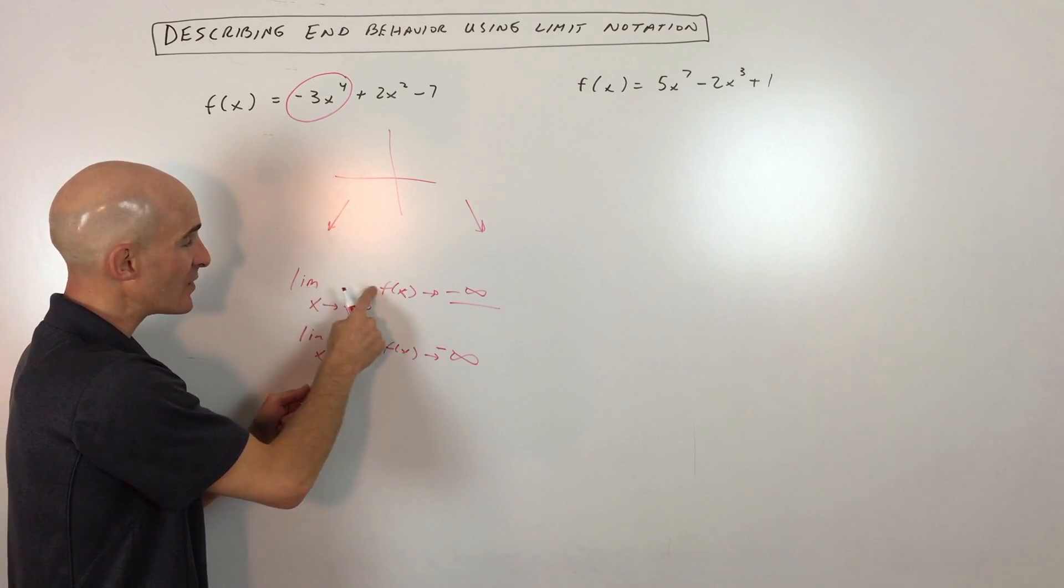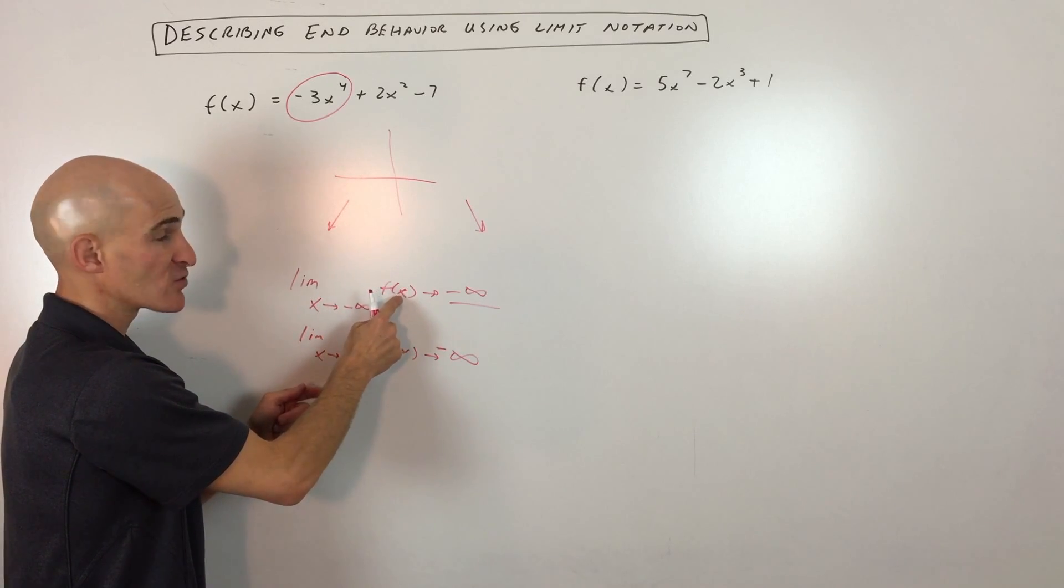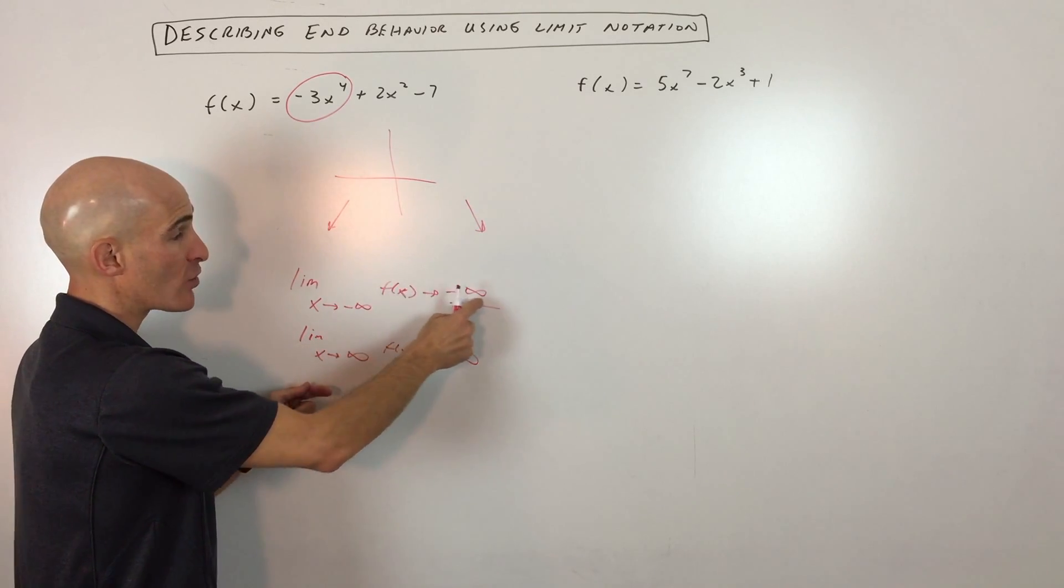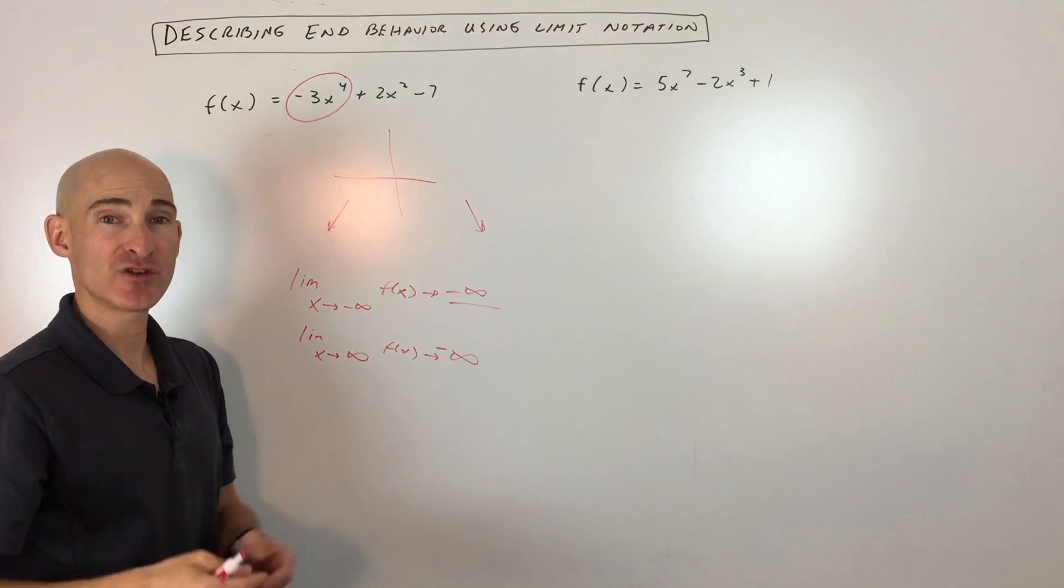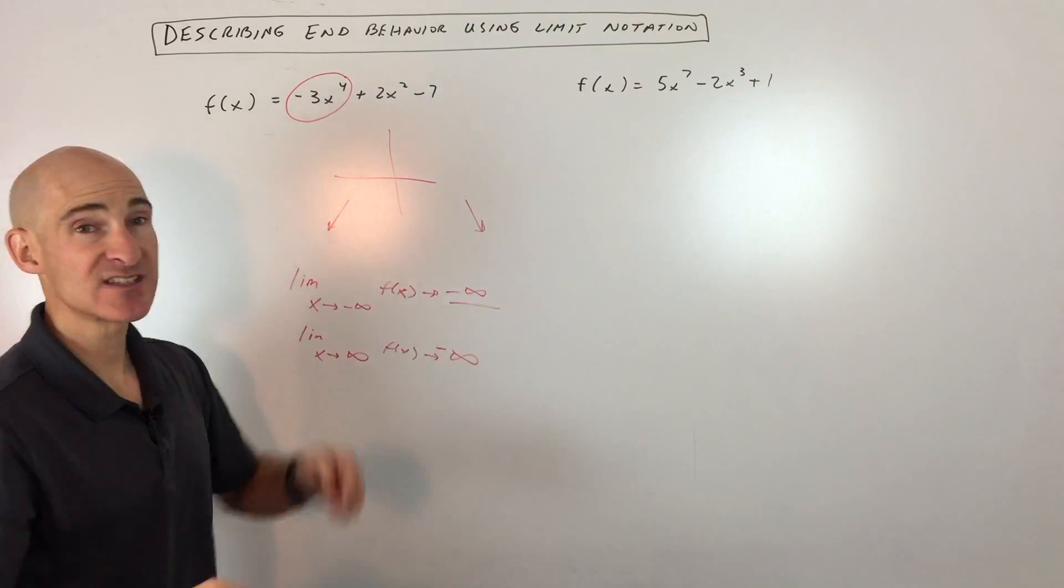x approaches negative infinity. And then at the same level as the limit here, we've got the f of x, which represents the y values. And we have this arrow telling us whether it's approaching positive infinity or negative infinity. Okay, let's do the next example. I think you've got the idea here.